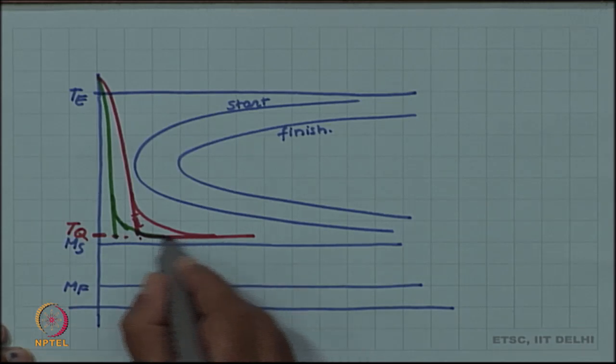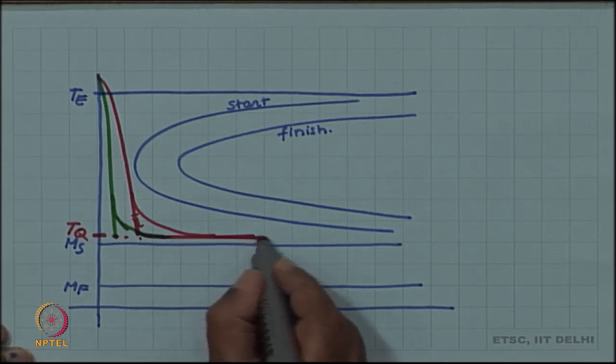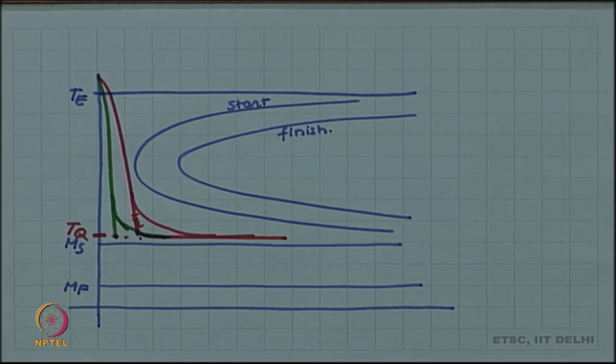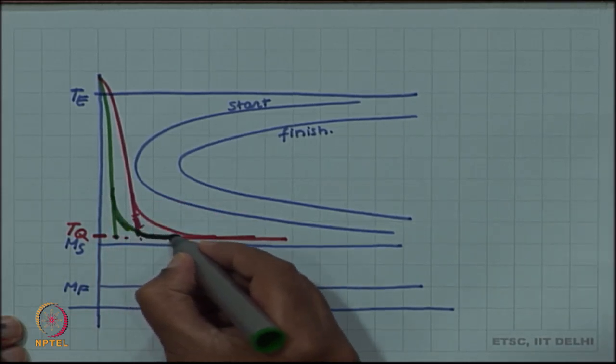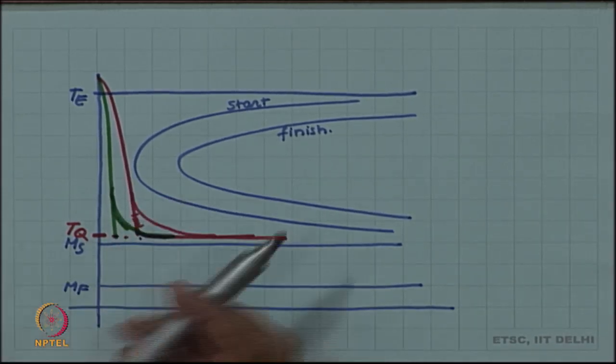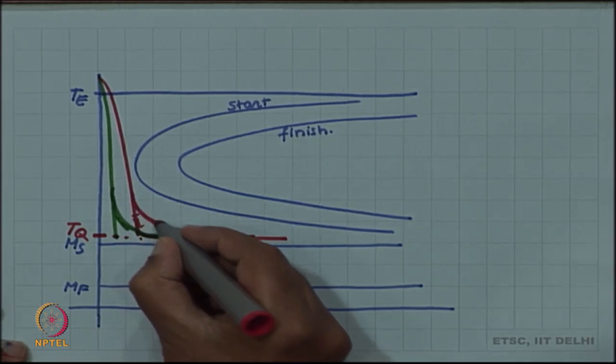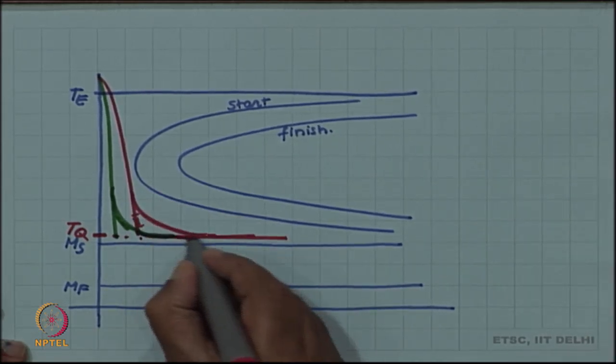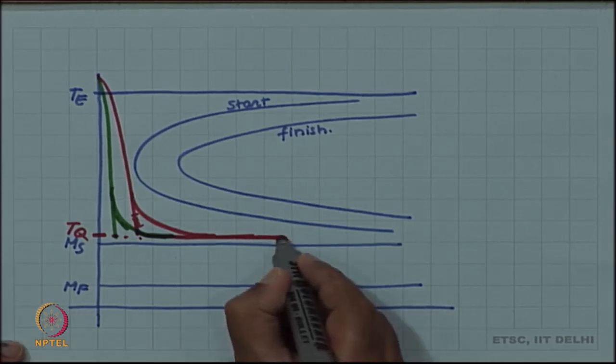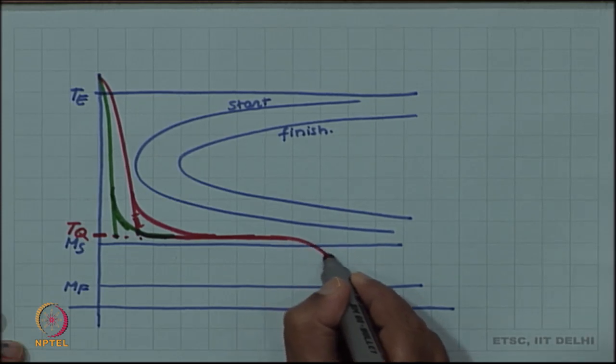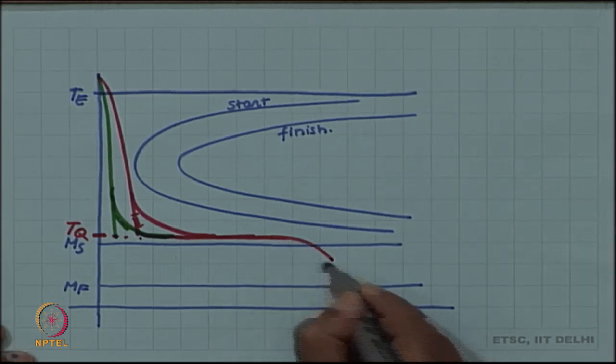Because the quenchant is held at a temperature higher than Ms, there will be time enough for the inside and the outside to come to the same temperature. Once they are at the same temperature, they can again be cooled and can be cooled much more slowly; there is no requirement for quenching now.